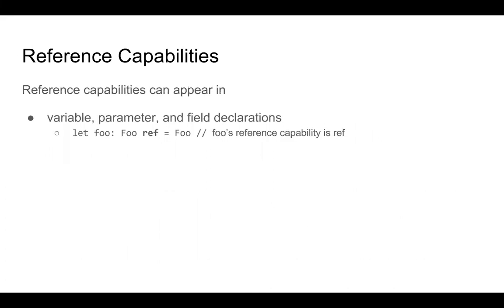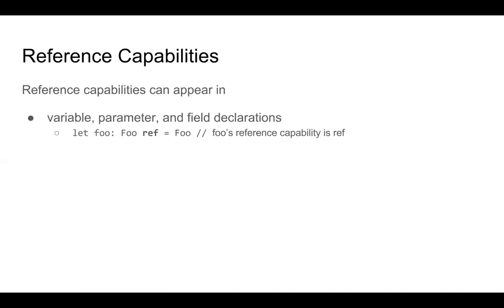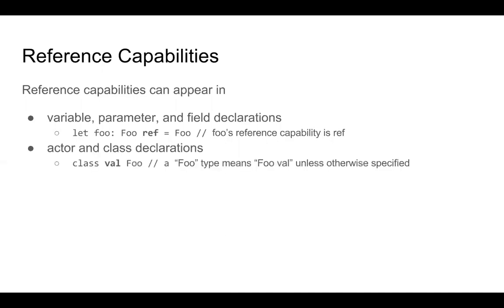Reference capabilities can appear as part of a variable, parameter, or field declaration. For example, 'let foo = Foo' creates a new Foo object assigned to the alias foo with a reference capability of ref. They can also appear in actor and class declarations — 'class val Foo' means that any time you see Foo used as a type, it actually means 'Foo val' unless otherwise specified. You can override it by explicitly stating another type, but by default that's what it means.